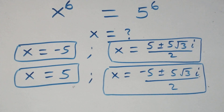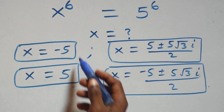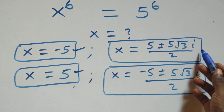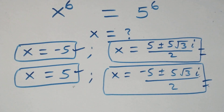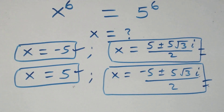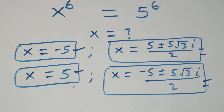Therefore, altogether in this problem we have six solutions: two real solutions x equals minus 5 and x equals 5, plus two complex solutions from the first case and two complex solutions from the second case. Thank you for watching. Don't forget to subscribe for more videos, turn on the notification bell, share this video, and put your comments. See you next class, bye for now.